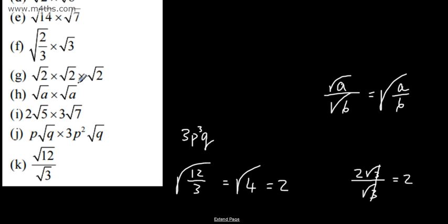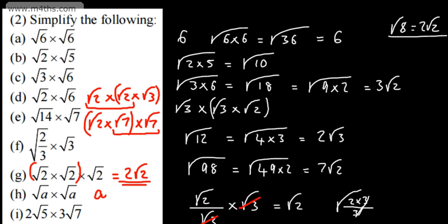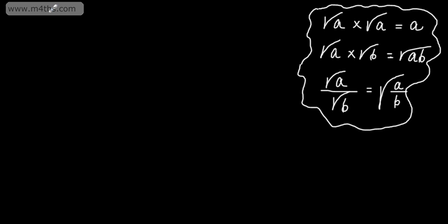That's a brief video on multiplying and dividing with surds. To recap the rules: the root of A times root A gives us A; root A multiplied by root B is root AB, and of course we can work that in reverse; and root A over root B is the root of A over B.